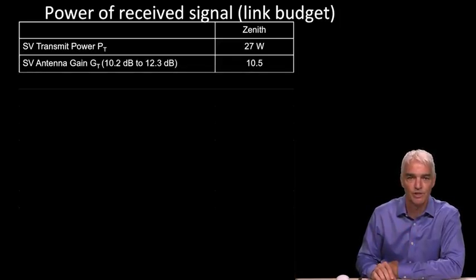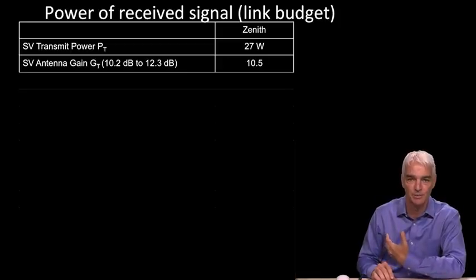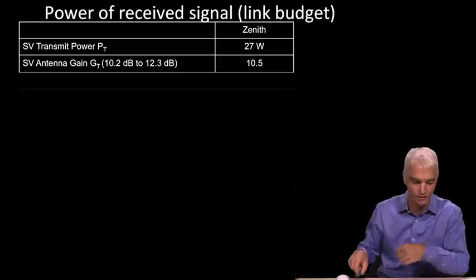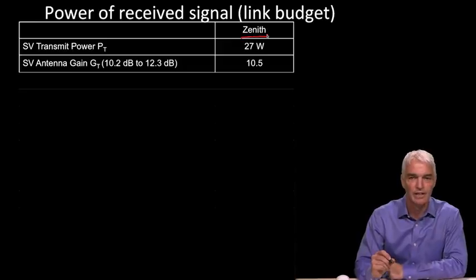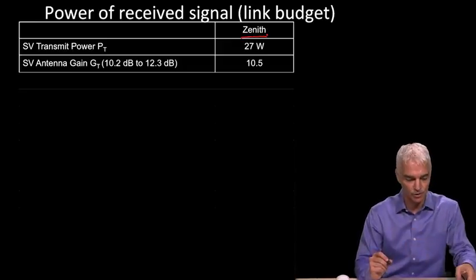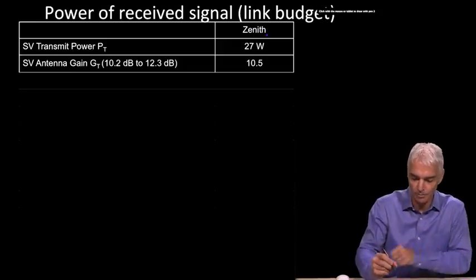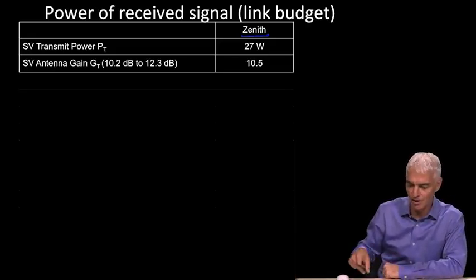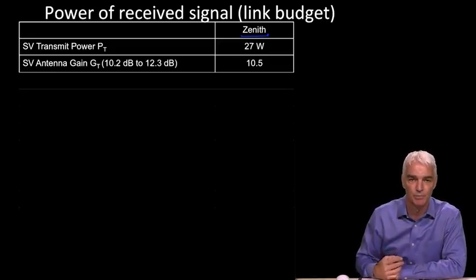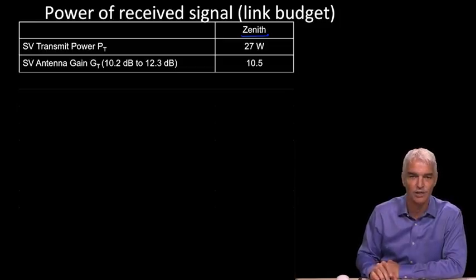So we start with 27 watts, and we say, what is the gain in a particular direction? The direction we're going to focus on initially is for the satellite at zenith, which means straight overhead, which corresponds to that blue line that we saw before. So at zenith, remember the gain was 10 in the previous diagram, and now I'm getting a bit more precise. It's in fact 10.2 dB or 10.5 in linear ratio.